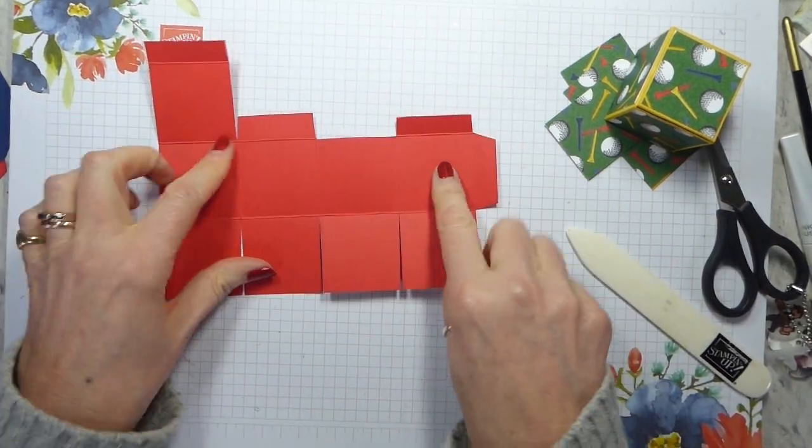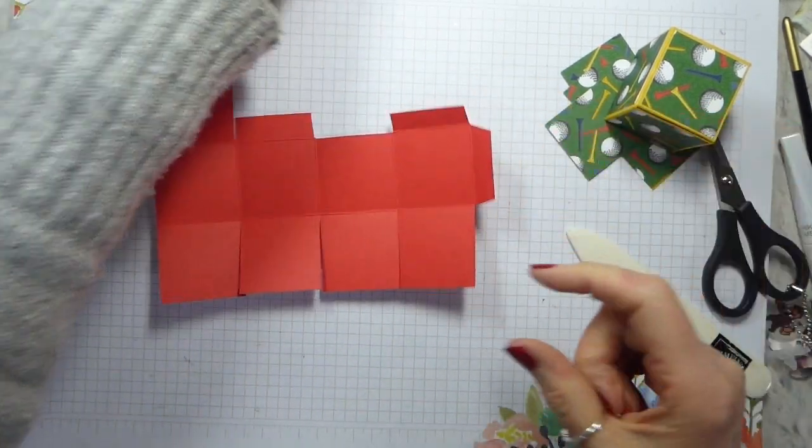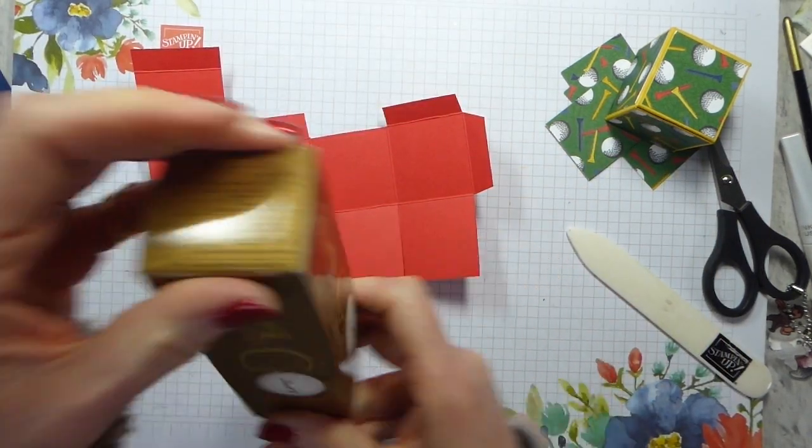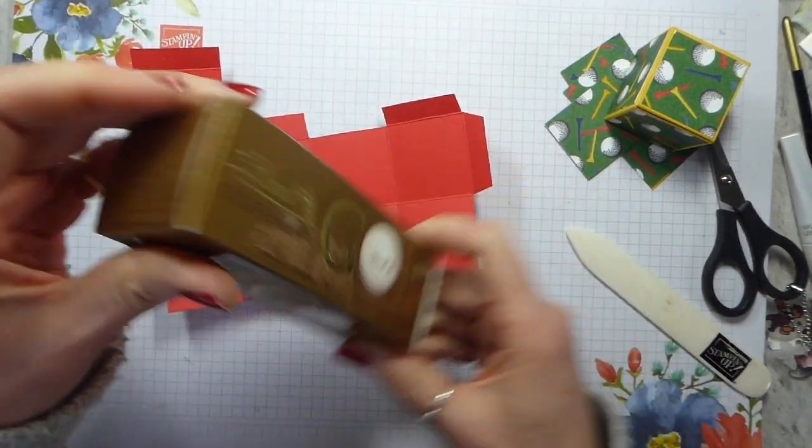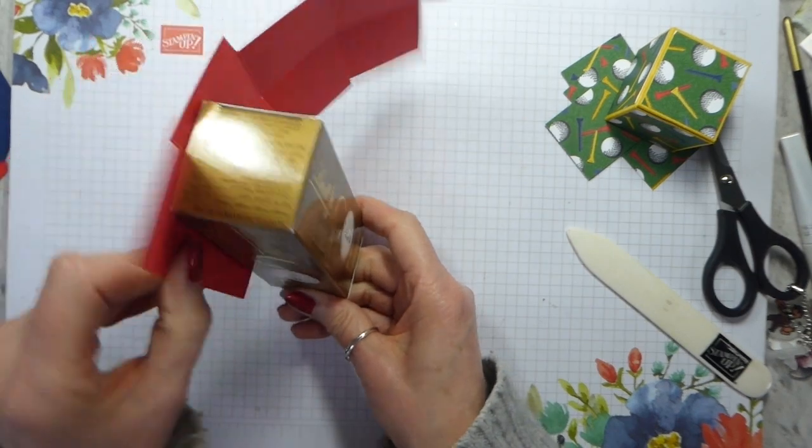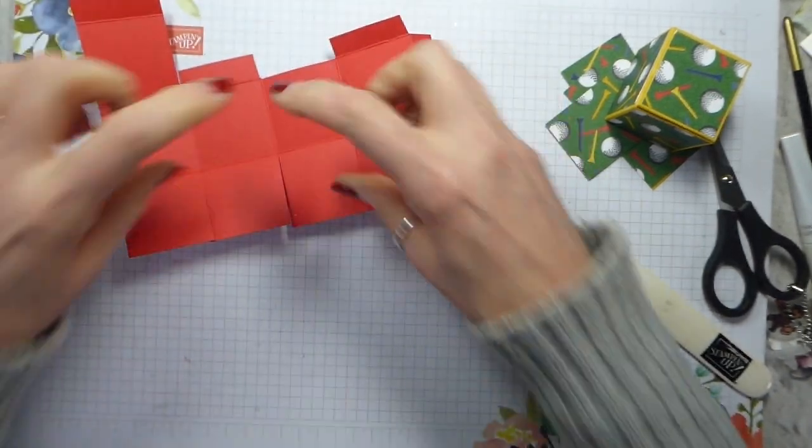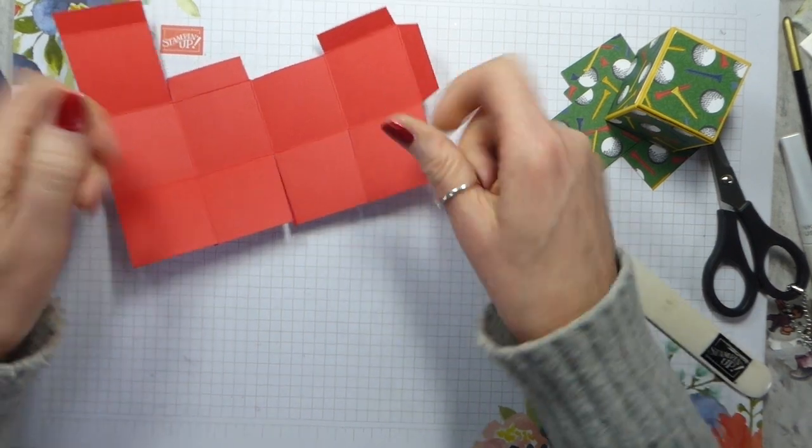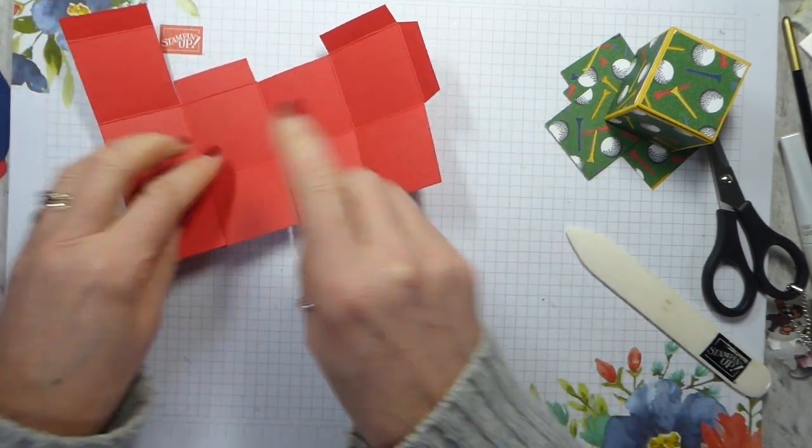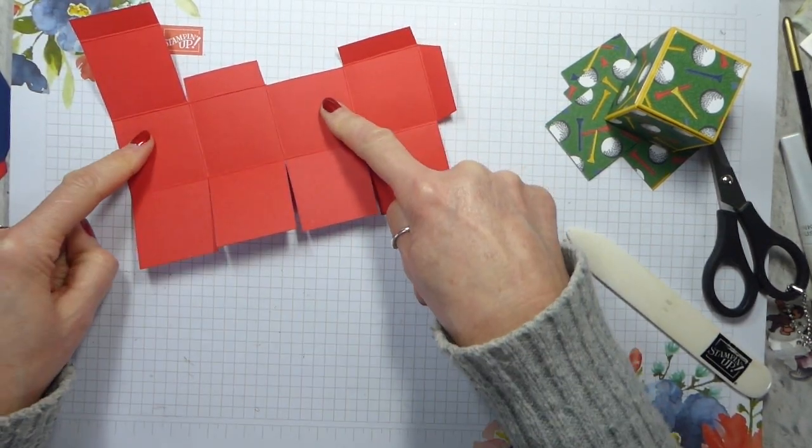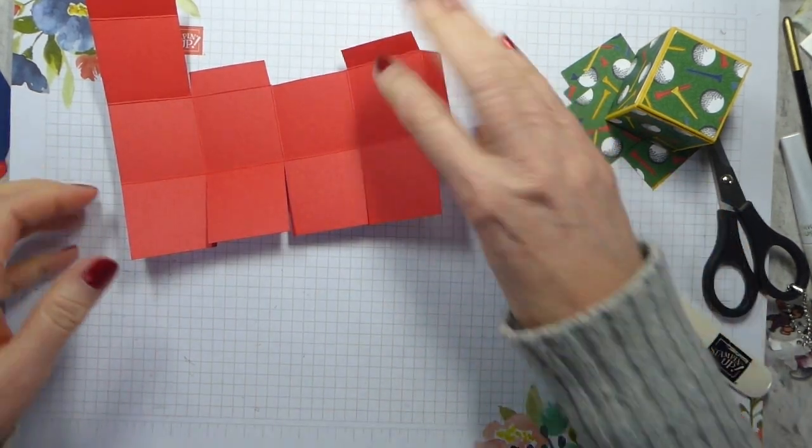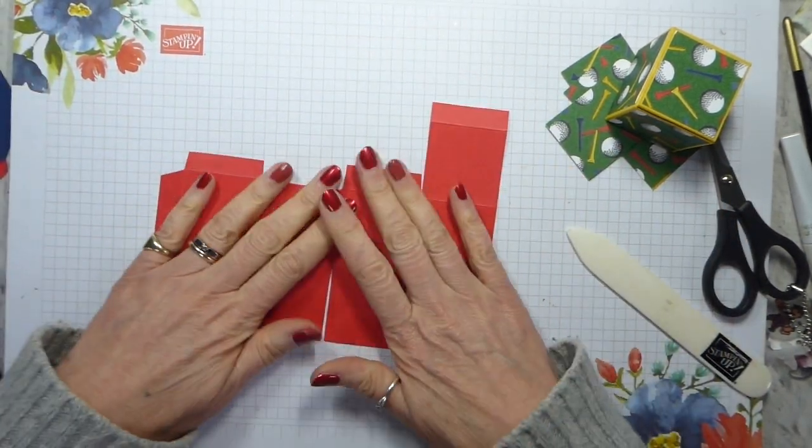And that would be the same whether it was longer. So, whether it was like this, except it wouldn't be. It would be this. This is basically that, but longer. So, if you had it so that it was opening on the long edge, then it would just be exactly the same, except these two pieces would be longer. So, I hope that hasn't confused too much. Right.